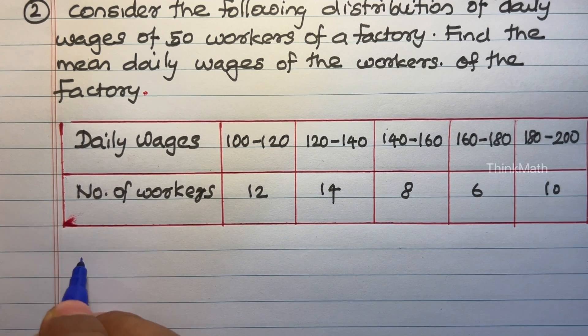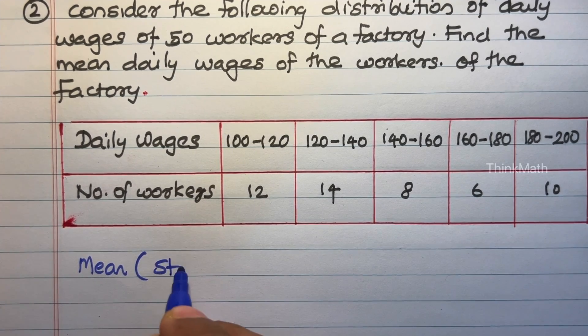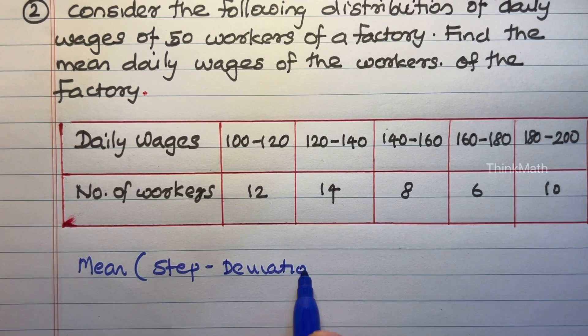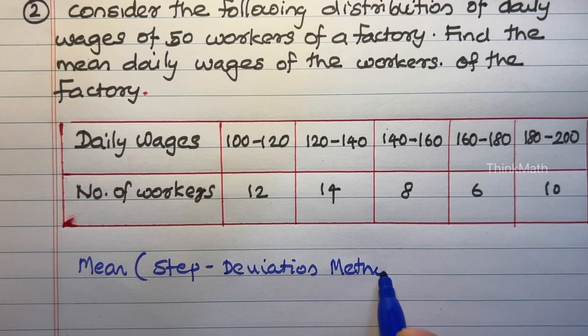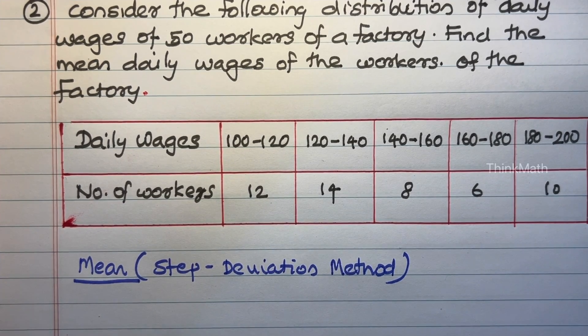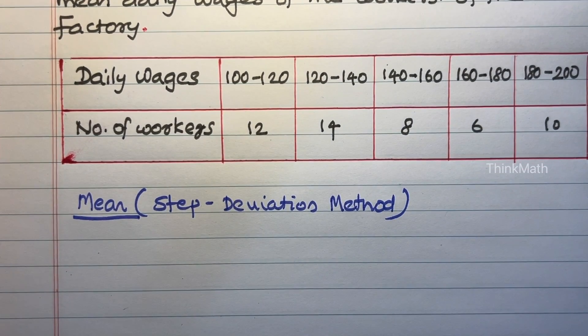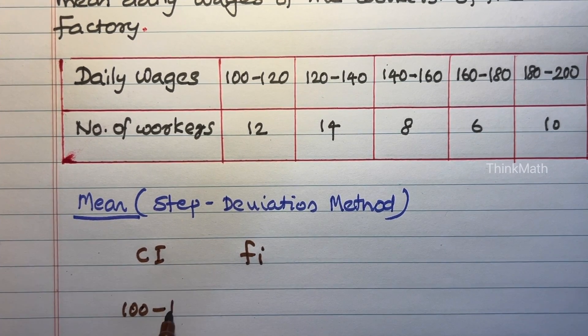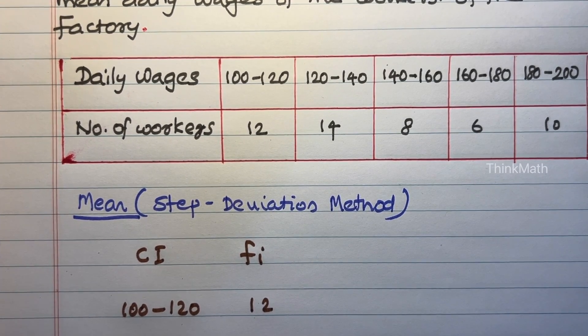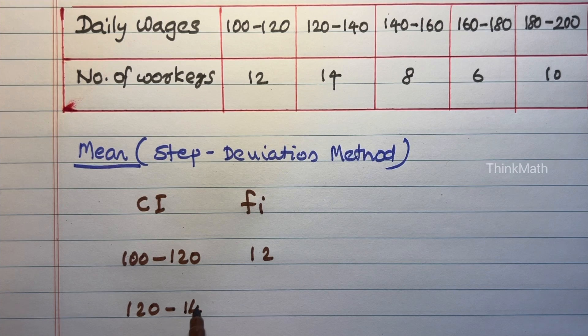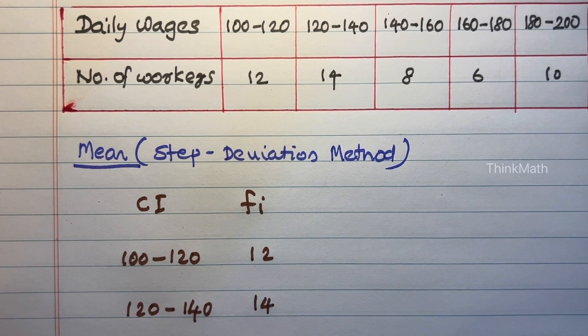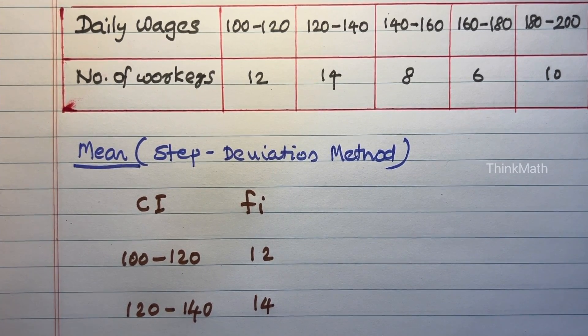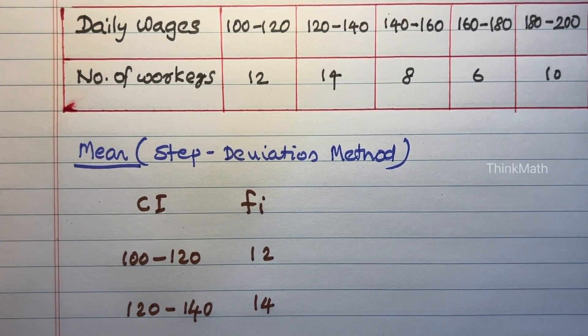Mean by step deviation method. Class interval, frequency fi: 100 to 120 is 12, 120 to 140 is 14, 140 to 160 is 8, 160 to 180 is 6, 180 to 200 is 10.